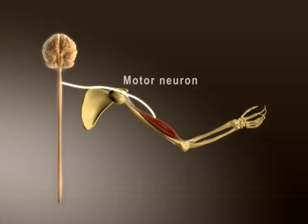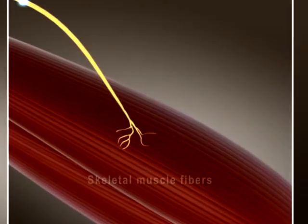Typically, a single motor neuron arising in the brain or spinal cord conducts action potentials that travel to hundreds of skeletal muscle fibers within a muscle.